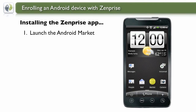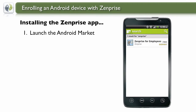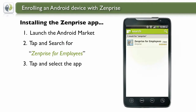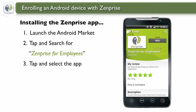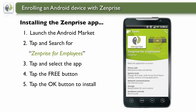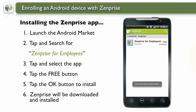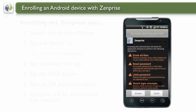To begin, let's launch the Android Market. Then tap and search for the ZenPrize for Employees application. When found, tap and select the app. Next, tap the Install Free button. And then when prompted, go ahead and tap the OK button to begin the install. ZenPrize will now be downloaded and installed locally to your Android device.